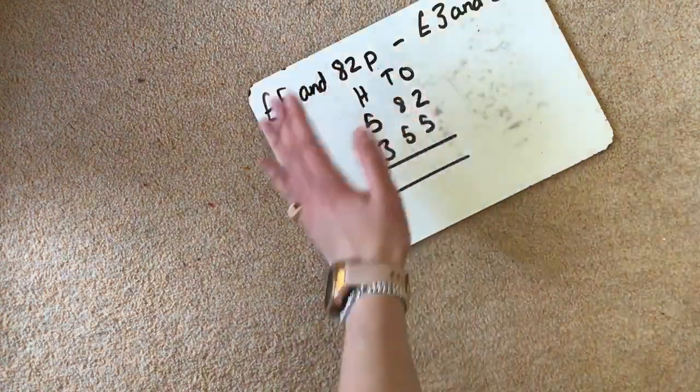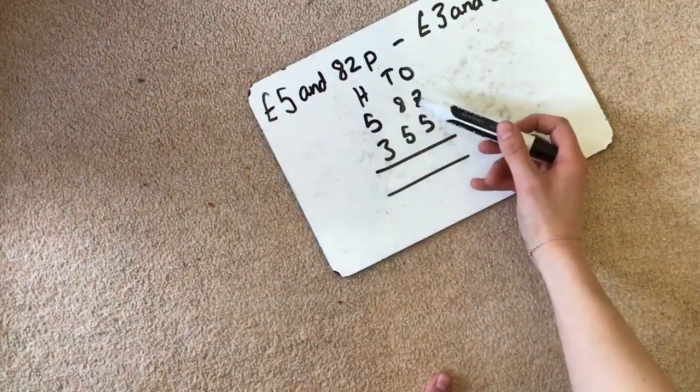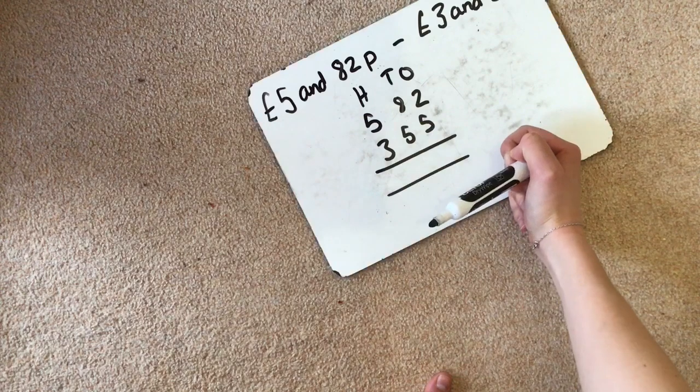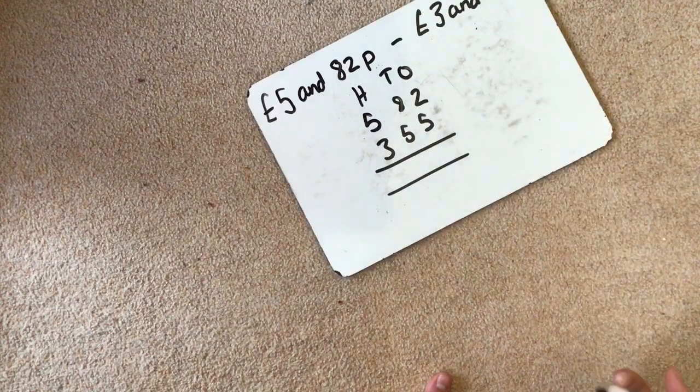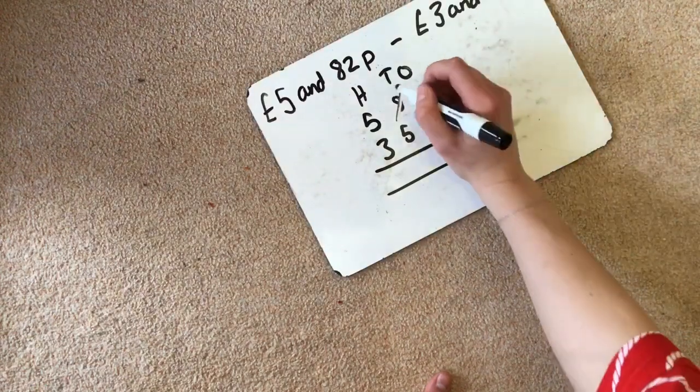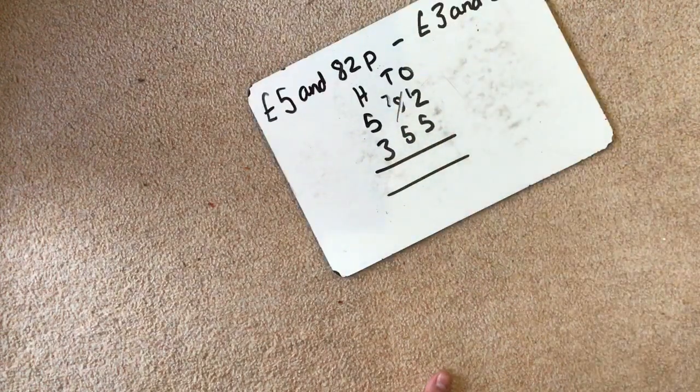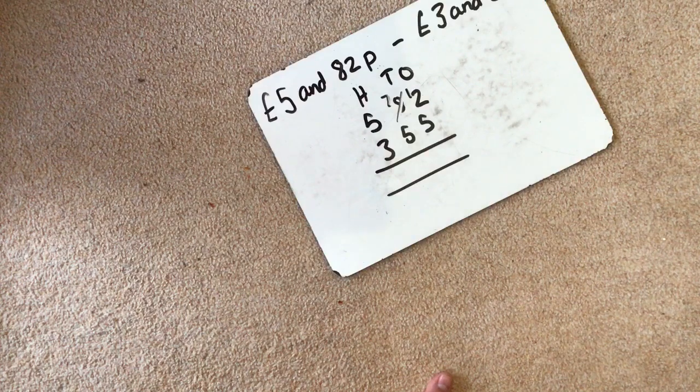Remember we're going to go over into the next column. So this is our tens column. We are going to ask if we can take one of the tens. So we're going to exchange this. So we're going to take that away. So this now becomes 70. And we can bring it into our ones column. So we now have 12.